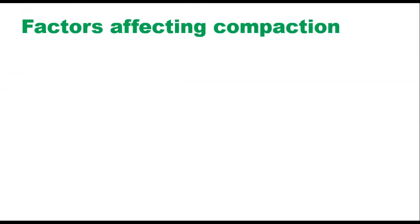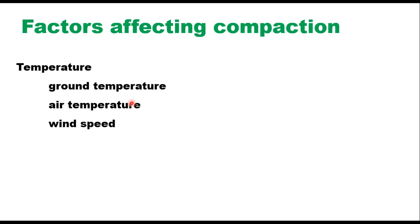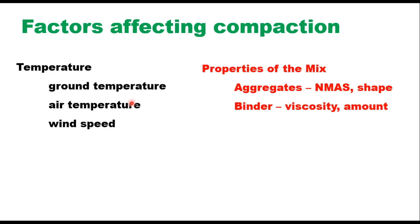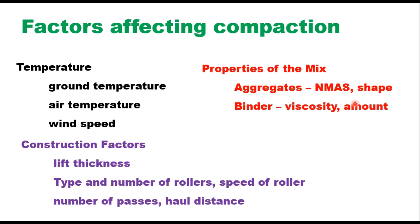Several factors can affect the compaction of a bituminous layer, and you can summarize them in three groups. The first is temperature — ground temperature, air temperature, and wind speed. Second is properties of the mix, like aggregates, nominal maximum size of aggregate, shape, texture, the property of the binder like viscosity and amount of binder in the mixture. Third is construction factors — layer thickness, type and number of rollers, speed of roller, number of passes, and haul distance.